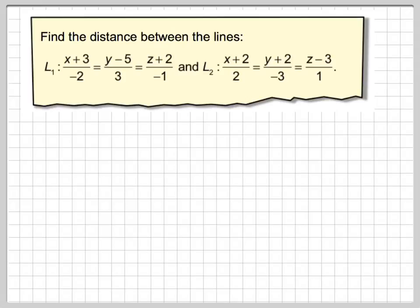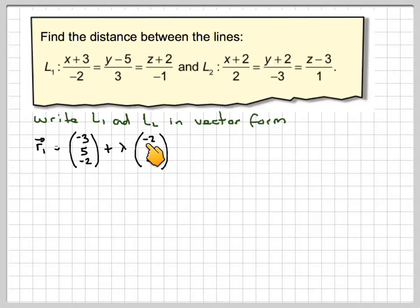First of all, we need to write these in their vector form. Because they've all started with x, y, and z, we can know that the point that the first line goes through is minus 3, 5, minus 2. The directional vector will be minus 2, 3, minus 1, with some parameter lambda.